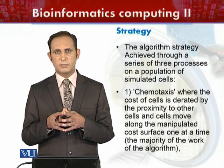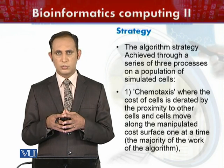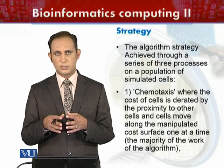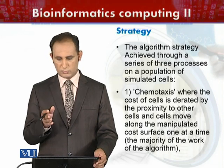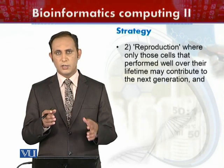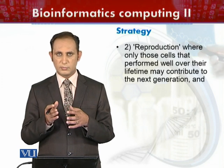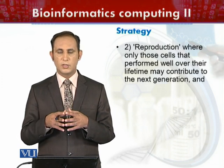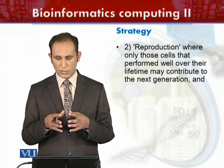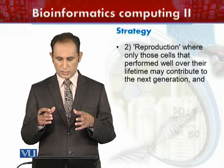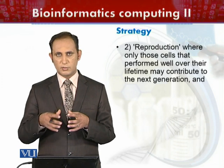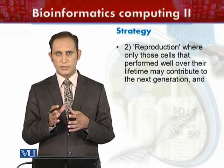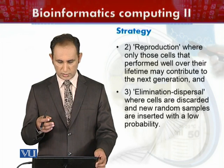In the chemotaxis step, the cost of the cells is evaluated based on proximity to other cells, and cells move across the cost surface one by one. The second process is reproduction, in which only those cells that have performed well over their generations survive in the population and are retained by the system into the next generation.